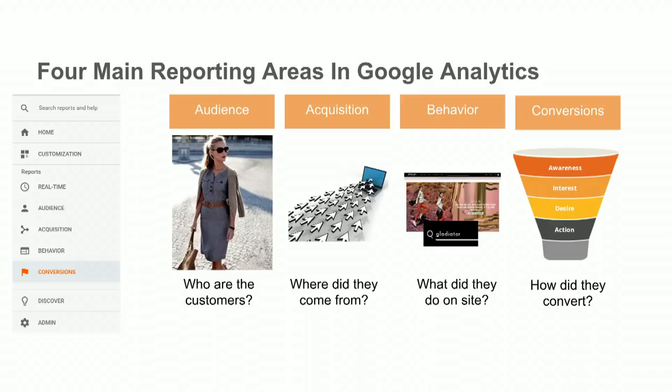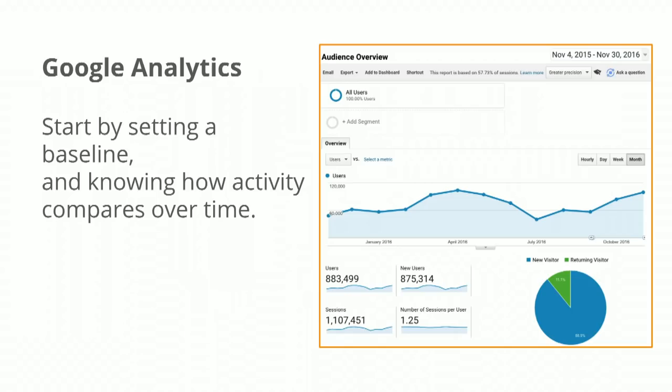This is Google Analytics. Our four main reporting areas tell you exactly what we were speaking of before. Who are those customers? That's your Audience. Where did they come from? Acquisition. What did they do? Behavior. And how do they convert? Conversions. Those four pieces are designed explicitly to aid your process as you go from a data-focused company to a change-focused company. For those just new to analytics, the idea is to have a baseline — once you put that tracking code in and it starts tracking visitors, you have something to compare against.